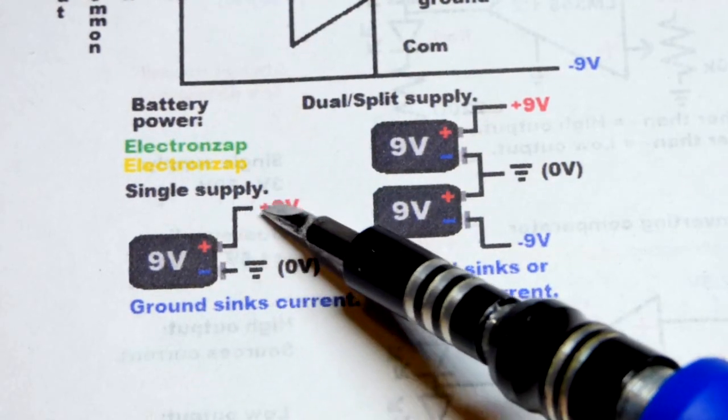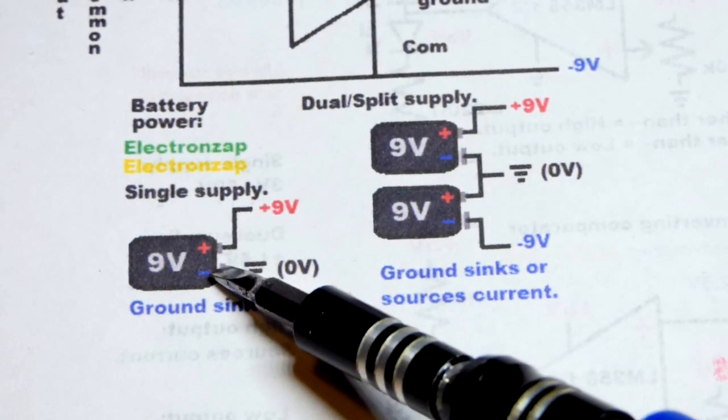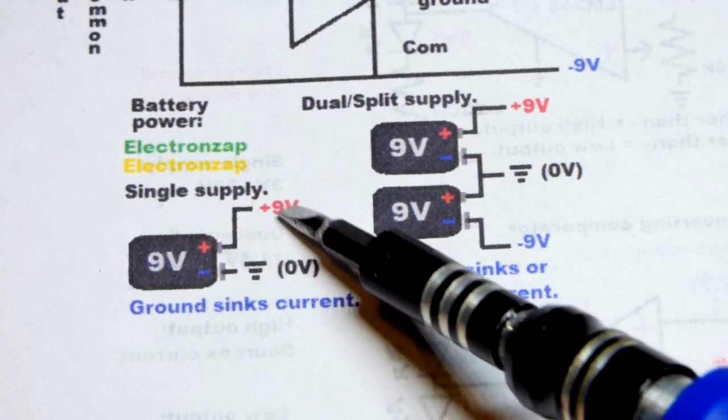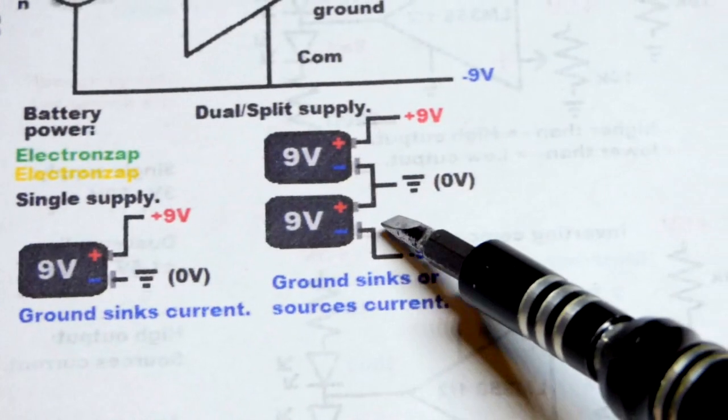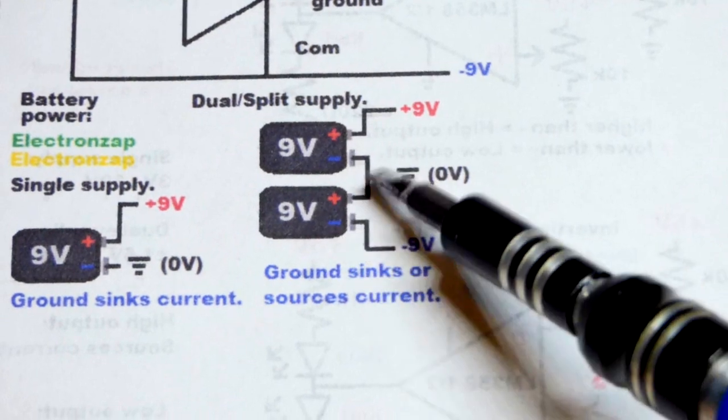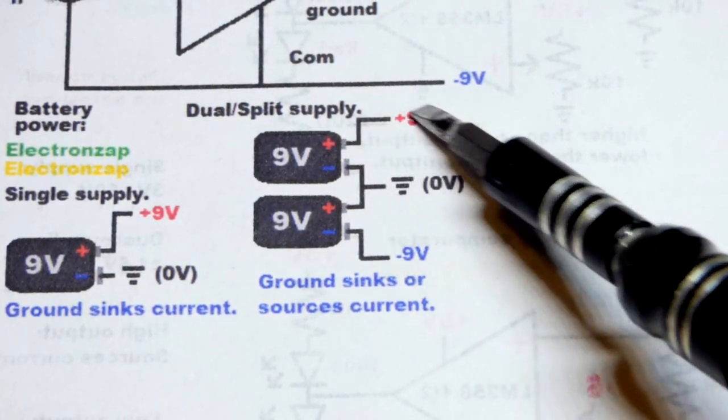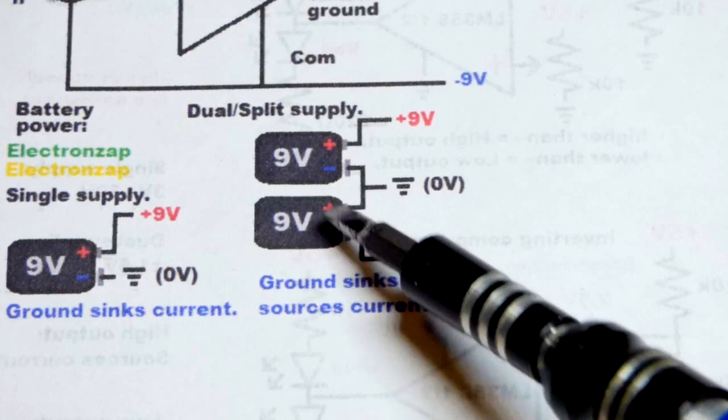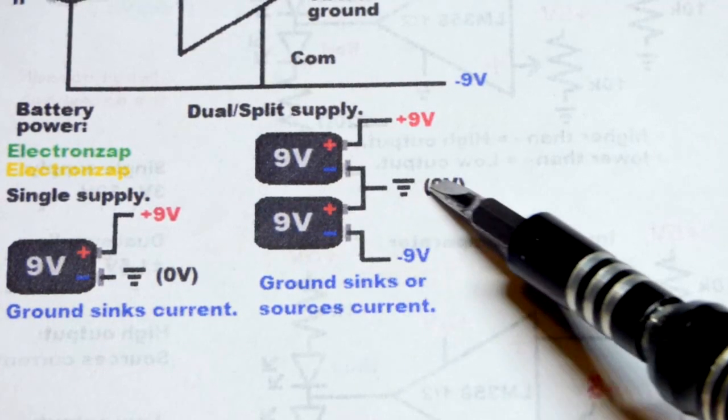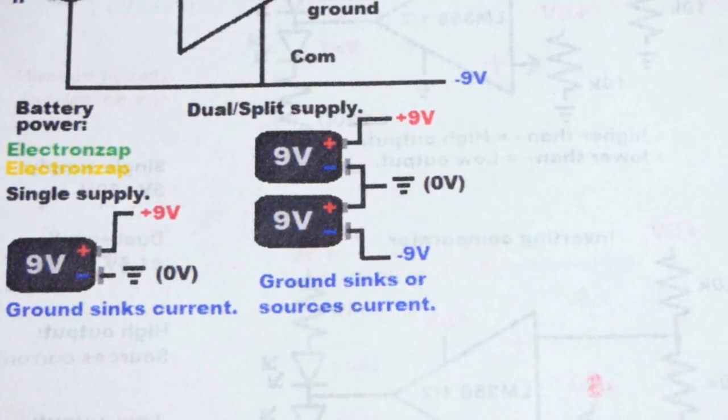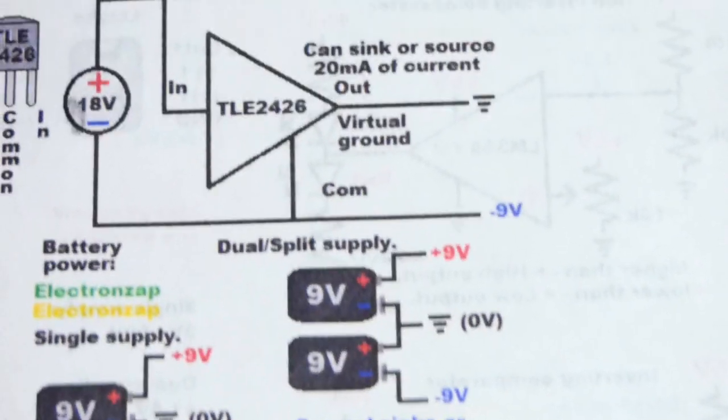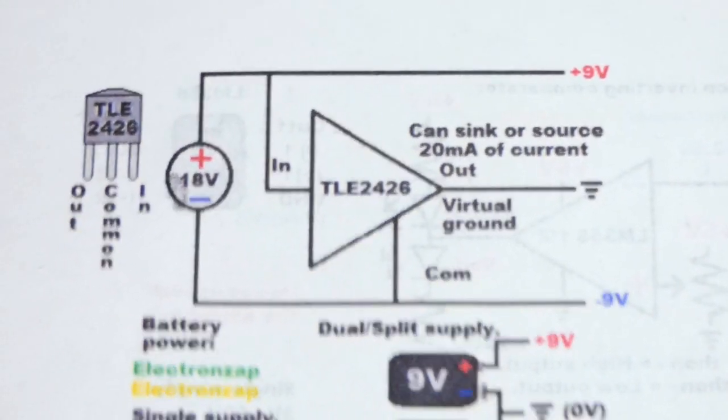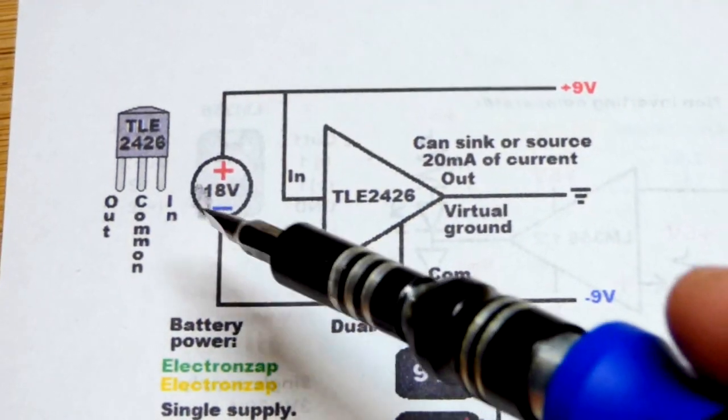So with just one battery alone all the ground does is sink current. You consider conventional current positive moving to negative. And if you have two of them in series you declare ground is the middle. Then it can sink current like that. Or it can be the source of current like that. It can go either way as we saw with the blue and the red LED.